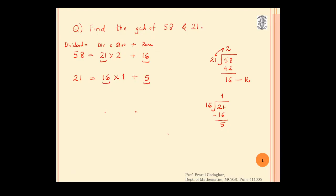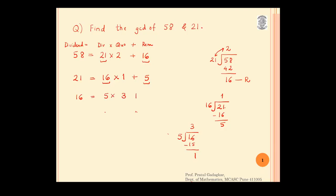In the next step I will again divide 16 by 5, and I will get remainder 1. So this means 16 is equal to divisor 5 into quotient 3 plus remainder 1. In the next step I will divide 5 by 1, so I will get remainder 0. So dividend 5 is equal to divisor 1 into quotient 5 plus remainder 0.